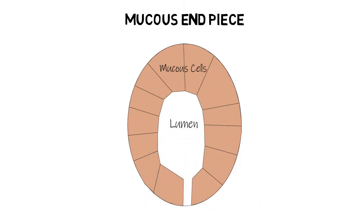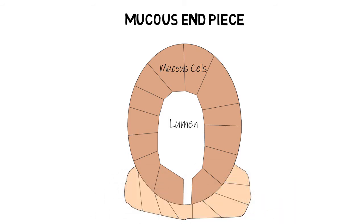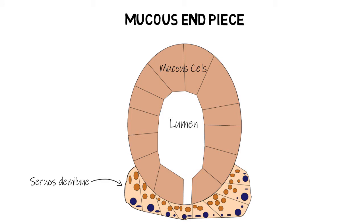An important feature that exists only in the mucous end piece of major and some minor salivary glands is that they have a small portion of serous cells arranged in the form of a demilune, or crescent of the moon. These serous demilune cells cover the mucous cells at the end of the tubules. Their secretion reaches the lumen through intercellular canaliculi, which extend between the mucous cells all the way up to the serous demilune.